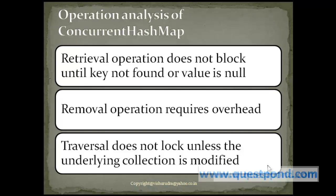The traversal operation in general case does not have locking unless the underlying collection is modified. Since concurrent hashmap is made in such a way that any change to its collection is known to it, the locking at the traversal case will be very much minimal.